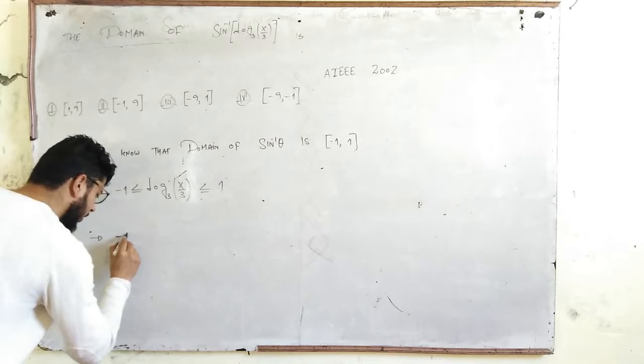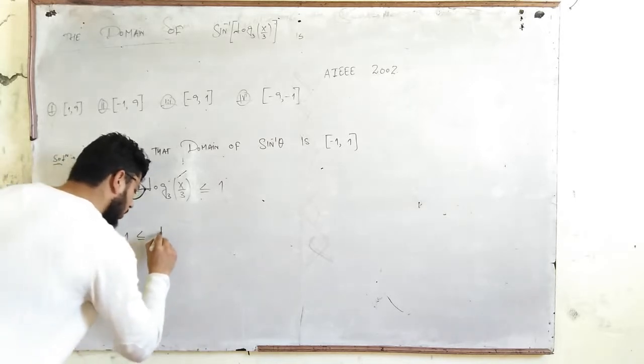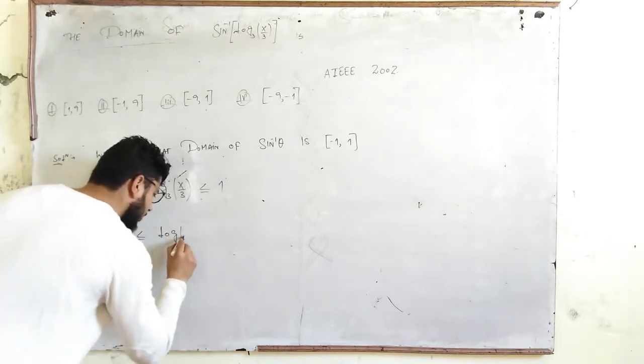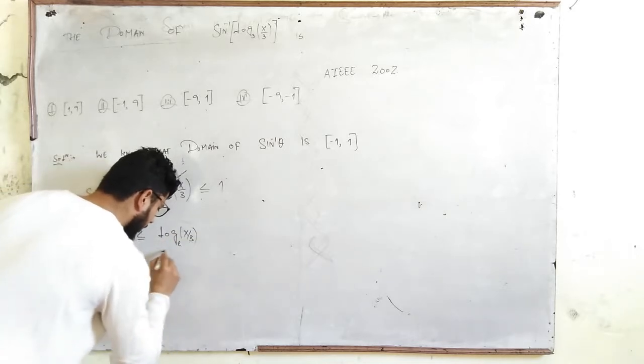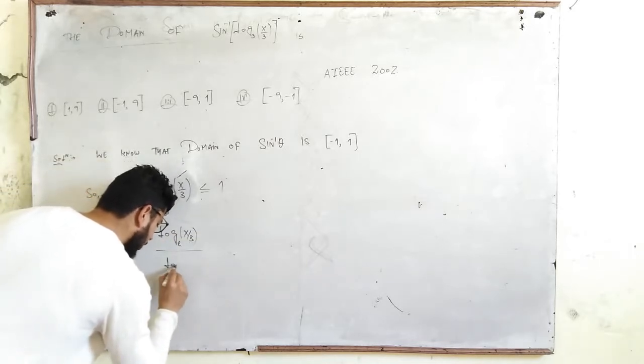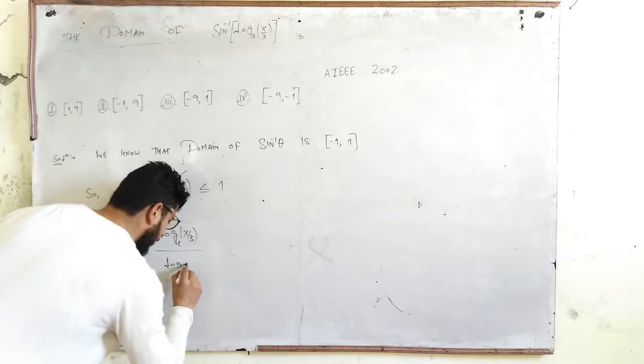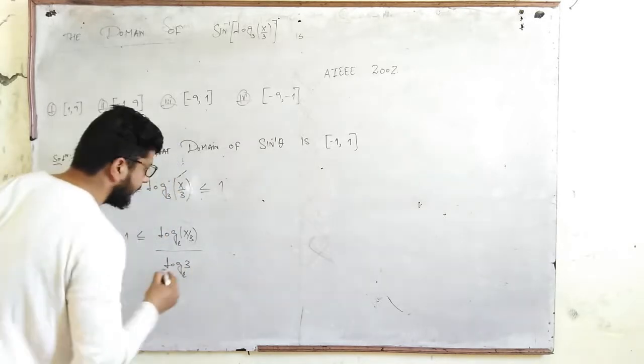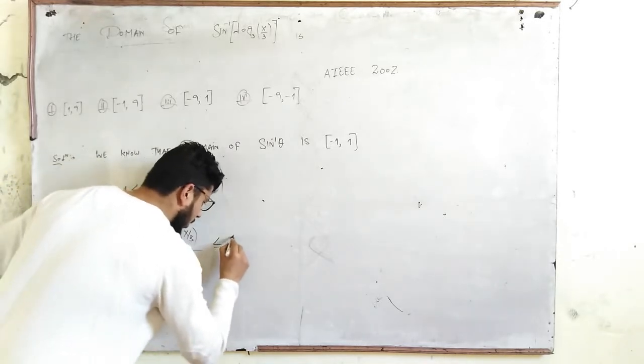Using the base change formula, you get ln(x/3)/ln(3). So you will get the inequality with ln(3) and ln(e). Now we will multiply this quantity through.